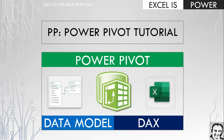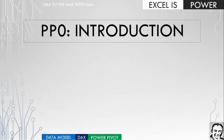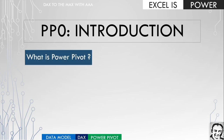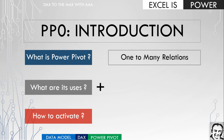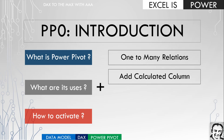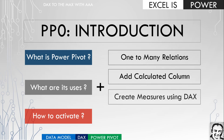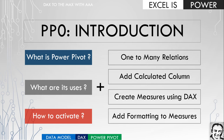Hello and welcome to the first video of the PP series, or Power Pivot tutorial series. This video is PP01, an introduction to Power Pivot. We are going to discuss three questions: what is Power Pivot, what are its uses, and how to activate it. We'll also demo a practical example covering how to build relations between tables, add calculated columns, create measures using DAX, and add number formatting to measures.